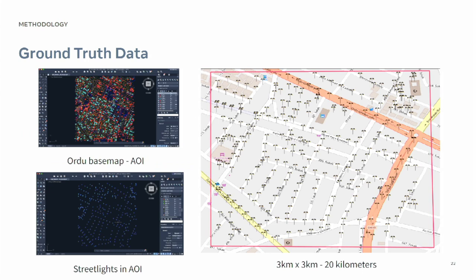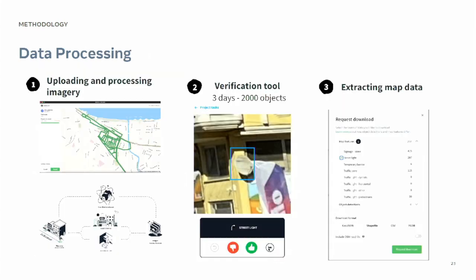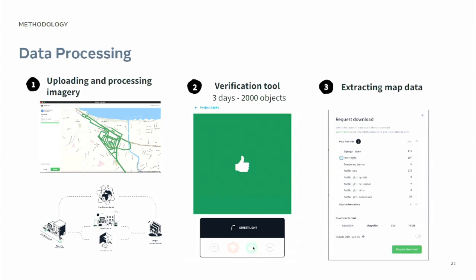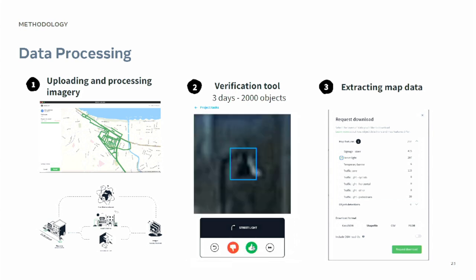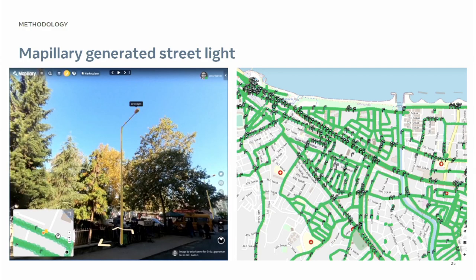Here's the ground truth data and area of interest — it's a 3 by 3 kilometer area, and 20 kilometers of data was collected for this project. For data processing, images are uploaded to Mapillary, false positives are removed with the verification tool, and then 297 streetlight detections were generated. The input data is street-level imagery, and the output is machine-generated streetlight data.